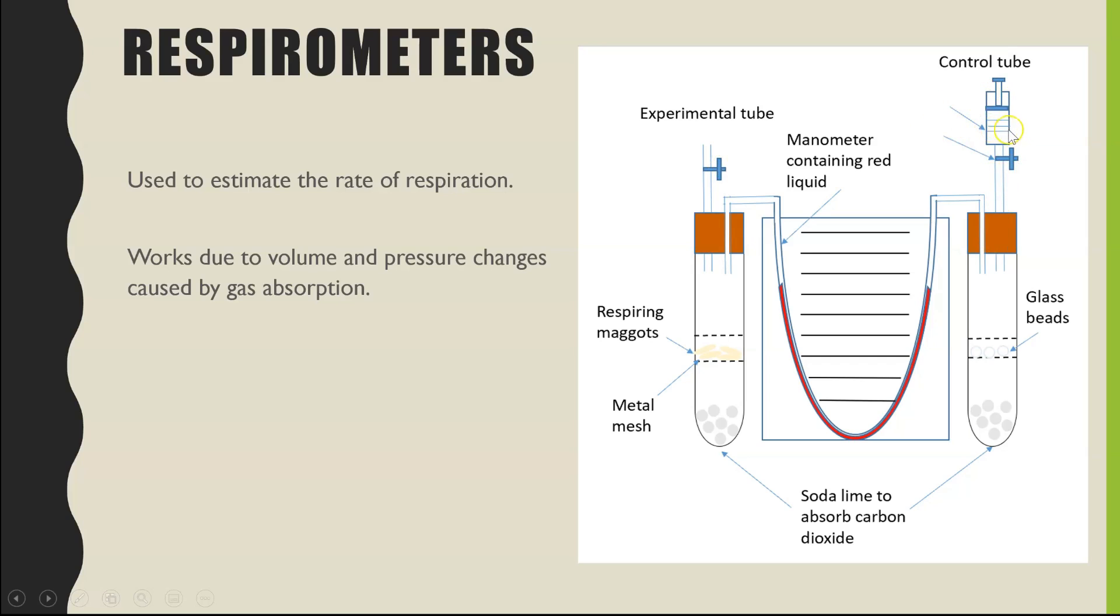And on the control tube we also have a syringe. Now the point of this is you will need to, if you want to do repeats, reset your equipment. So you can move the colored liquid back to the start point whereby both points are at exactly the same level. And you can do this by either pulling up or pushing down on the syringe to change the volume of gas inside and therefore move the liquid back to the start point.